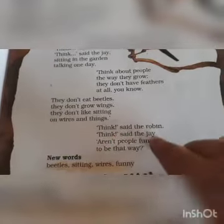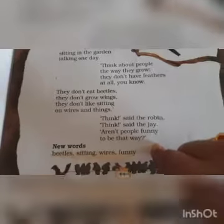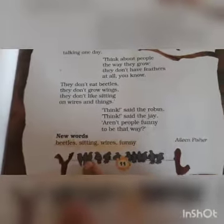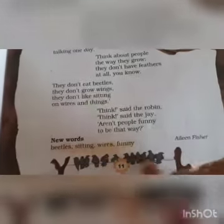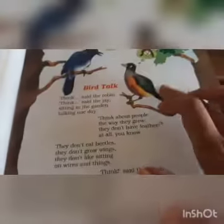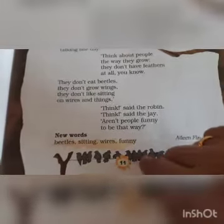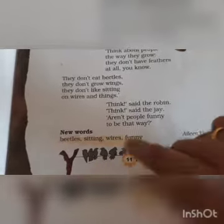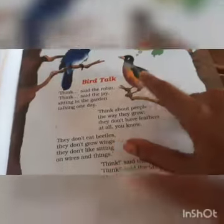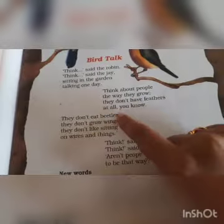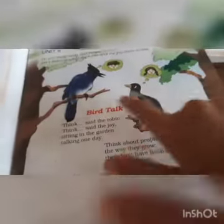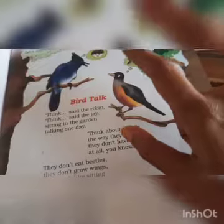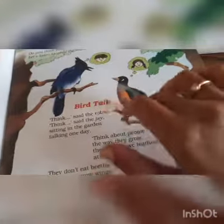Then again they are saying, think, said the robin. Think, said the jay. Aren't people funny to be that way? So, because we humans don't have feathers, we don't eat beetles, we don't grow wings, we don't sit on wires or trees — this is why these birds are finding us funny. Wo hamein funny samaj rahe hain, hamein mazedar samaj rahe hain. Hamare pe unhe hasi aa rahi hai. Just like we find animals funny, these two birds are finding us humans funny.